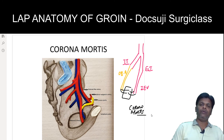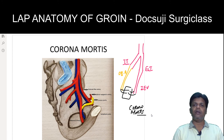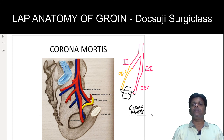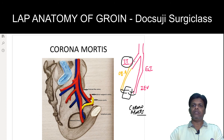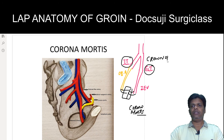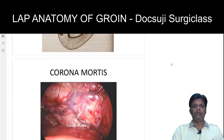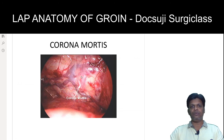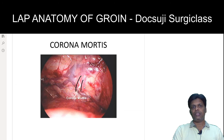During laparoscopic hernia surgery, this anatomy is very important. Sometimes anomalous arterial branches are present, so you must be very careful while dealing with this location. Because branches are coming directly from two major vessels — the internal iliac and external iliac — injury to these vessels can cause torrential bleeding and may even cost the patient their life. This is why coronomatis is otherwise called the crown of death. You can see the vascular anastomosis between the two vessels in this intraoperative image.